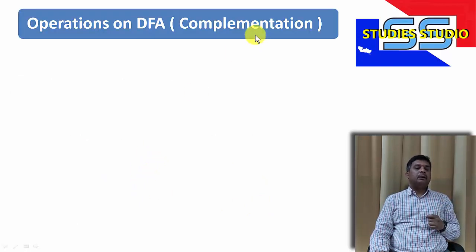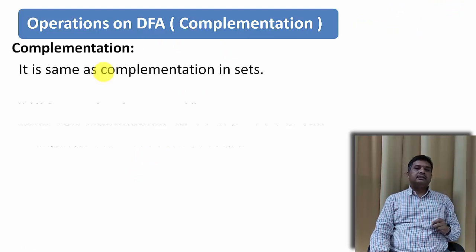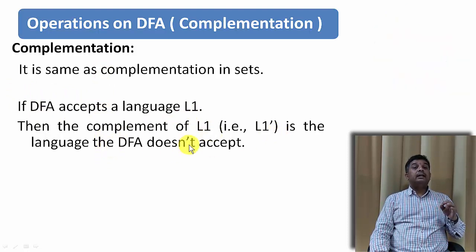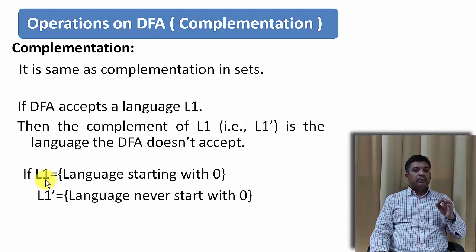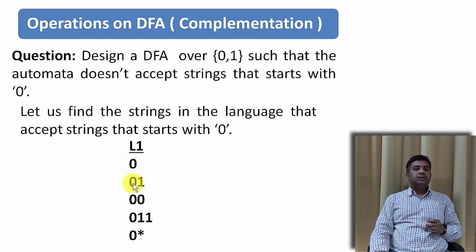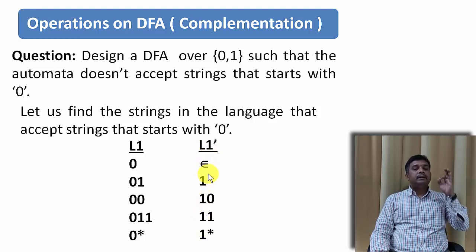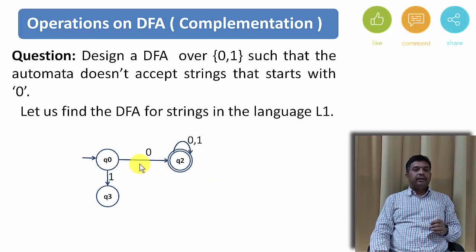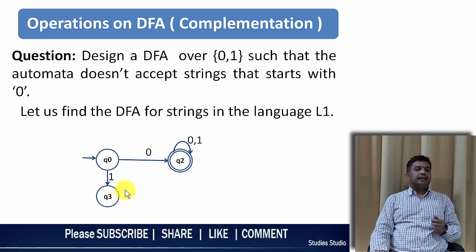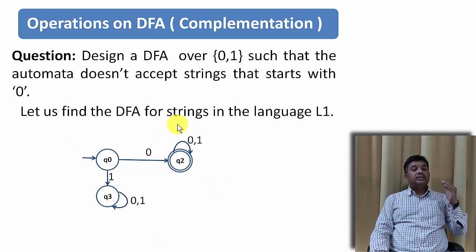Let us see one more operation, that is complementation. Complementation in DFA is same as complementation in set theory. If a DFA accepts language L1, then the complement L1' is the language that the DFA doesn't accept. If L1 is the language starting with 0, then L1' never accepts strings starting with 0. The DFA that accepts strings starting with 0 looks like this, with a dead state loop for any further inputs remaining in the dead state.